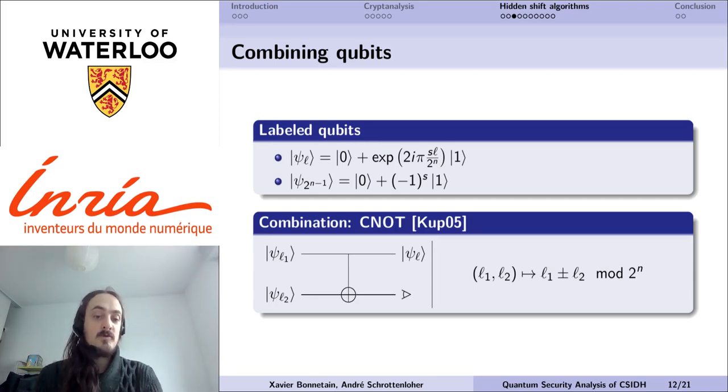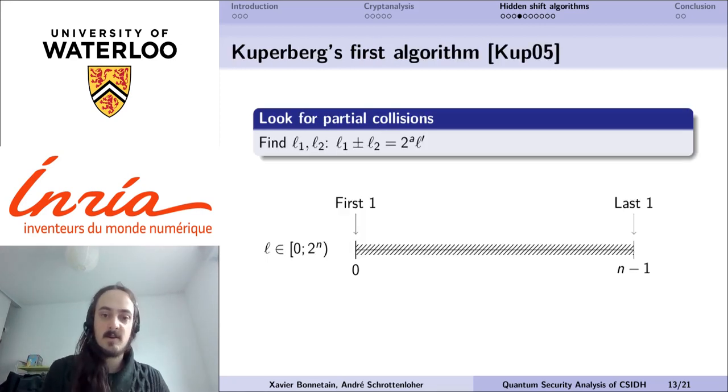The first idea is due to Kuperberg in 2005, which is simply to use a CNOT to take two labeled qubits, destroy them, and produce a new labeled qubit whose phase, depending on the measurement in this circuit, will either be the sum or the difference of the two previous labels. From this very simple circuit, we can devise an efficient algorithm.